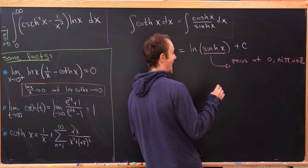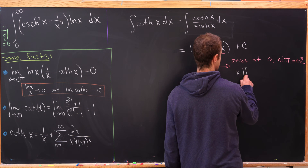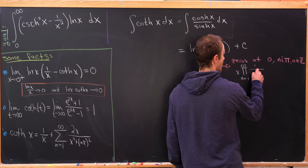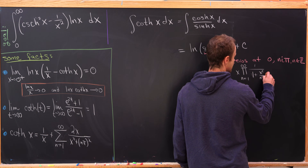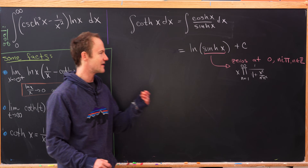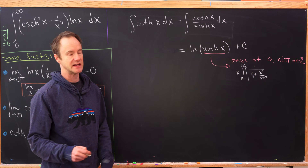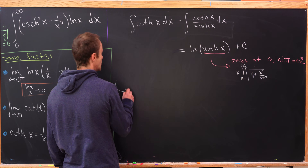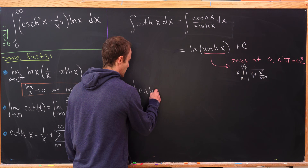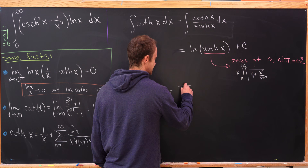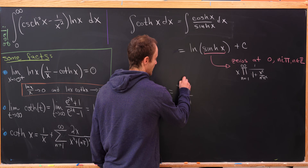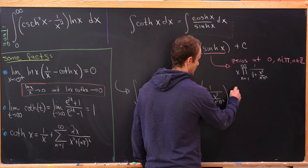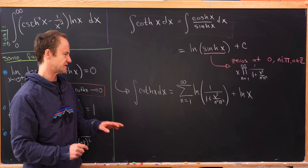That means we can factor the hyperbolic sine as x times the product as n goes from 1 to infinity of 1 over 1 plus x squared over n squared pi squared, by combining the complex conjugate roots n·i·pi and minus n·i·pi. Taking the log turns the product into a sum. So the integral of the hyperbolic cotangent equals the sum as n goes from 1 to infinity of the log of 1 over 1 plus x squared over n squared pi squared, plus the natural log of x, plus some constant.